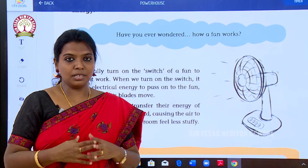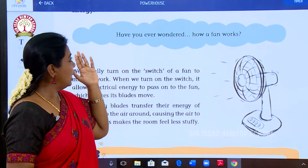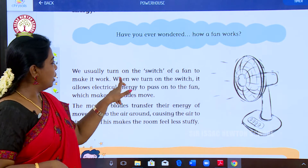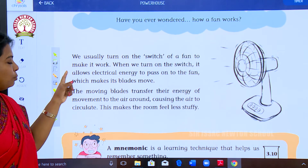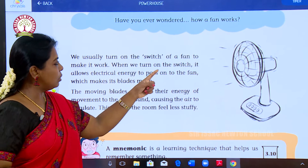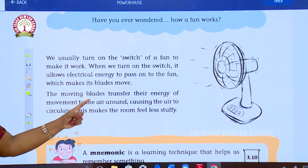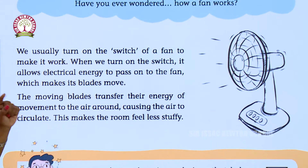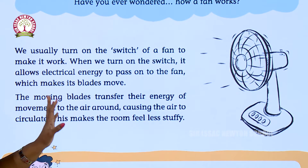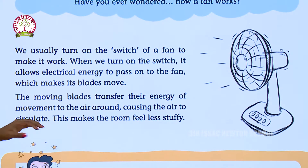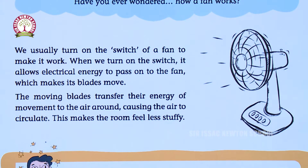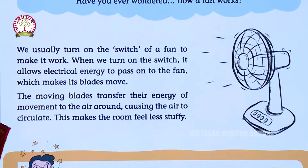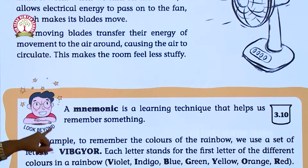All home appliances need electricity — that electricity is called electrical energy. We usually turn on the switch of a fan to make it work. When we turn on the switch, it allows electrical energy to pass to the fan, which makes the blades move. This is known as electrical energy.